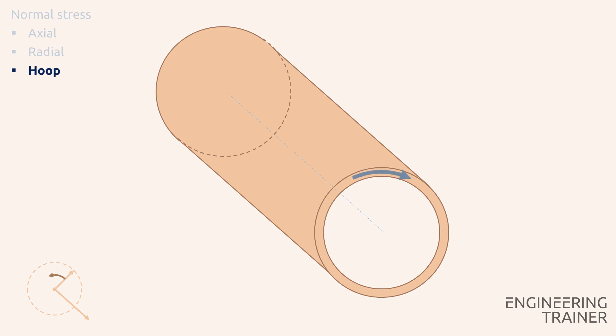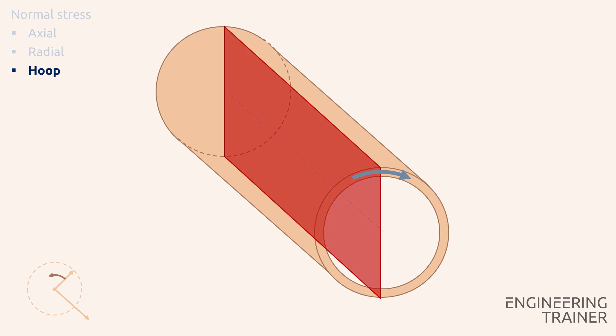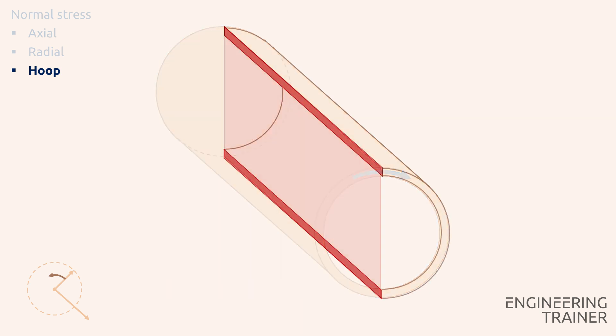We continue with the hoop stress. To capture this stress, we need to take a cross-section in the axial direction of the pipe, which basically cuts the pipe in half. Now any force applied perpendicular to our cross-section causes a hoop stress. An example is the pressure that works on the inner surface of the pipe wall.